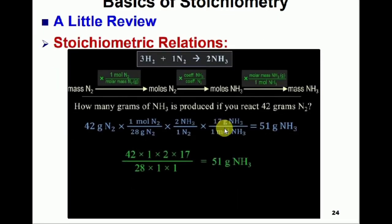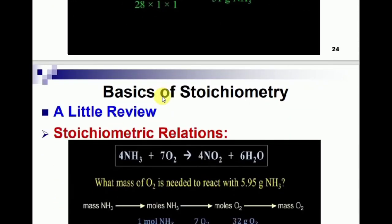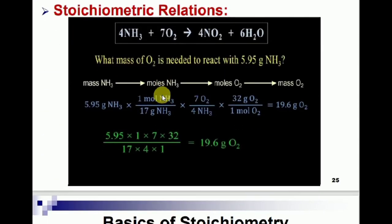The concept is: convert mass into moles, then use molar mass to convert back into mass — this is the tricky part of the mass-mass relationship. In the next example: what mass of O2 is needed to react with 5.95 grams of NH3? Using the stoichiometric equation and mass-mass relationship, you can find the mass of O2. First, convert mass of NH3 into moles — one mole of NH3 is 17 grams.